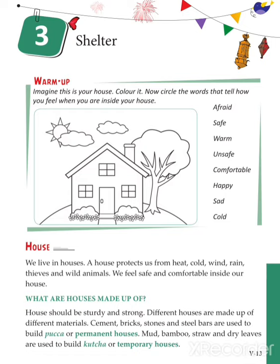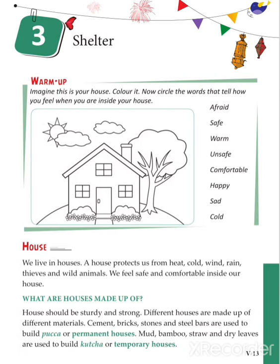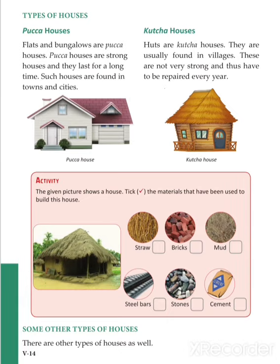Paka houses are permanent houses. The materials like mud, bamboo, straw, and dry leaves are used to build houses which are called kacha houses. These are temporary houses. As we can see here, two different houses — one is paka and one is kacha. A fixed shape is paka and a temporary shape is kacha.